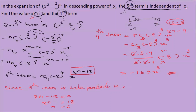The term independent of x means there is no power of x — it is x to the power 0. This is also called the constant term. When the power equals zero, x to the power 0 equals 1. So the coefficient of that term is the value itself.